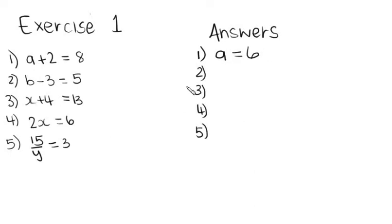I hope you all found that to be easy. Let's look at number 2. b minus 3 is equal to 5. So the question is, what minus 3 is equal to 5? And we all should know that the answer to b will be 8. Because 8 minus 3 gives you 5.